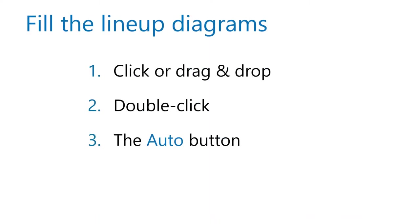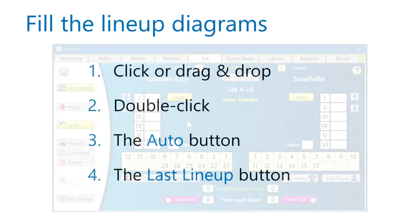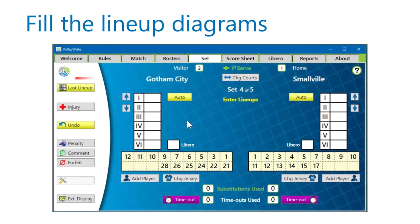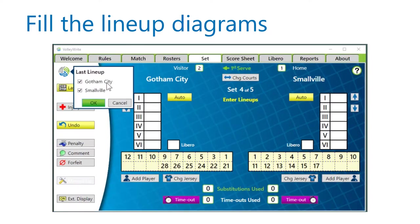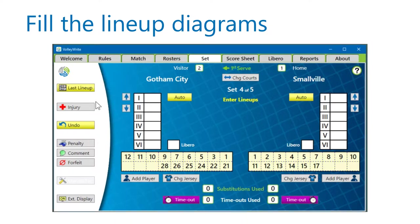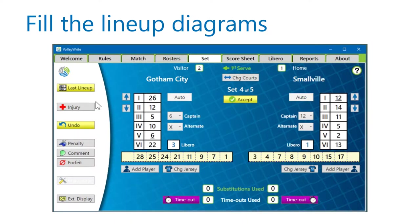After the first set, you have the option of using the Last Lineup button. This button lets you select a team or teams, and VolleyWrite will populate the diagram with that team's starting lineup from the previous set. VolleyWrite defaults to loading the teams which don't already have players entered into the lineup diagram. Just be aware that the Last Lineup button writes over any numbers you've already entered.